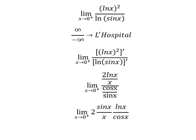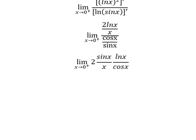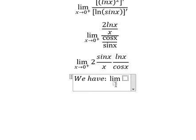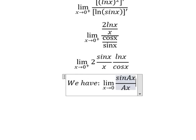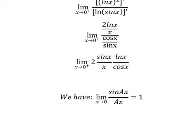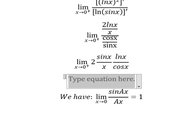We have the formula here: when x approaches 0, sin(Ax) over Ax equals 1. That means this one, and now we can put it like this.